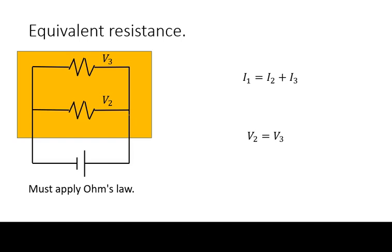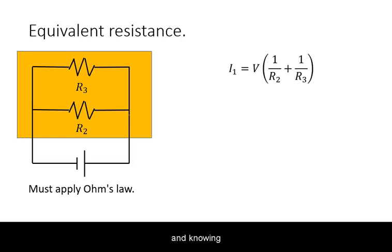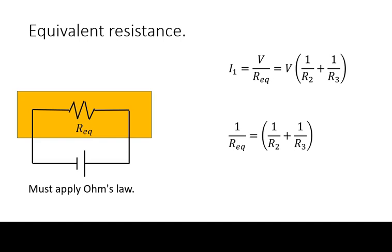For circuits, these considerations have implications for equivalent resistance. If we apply Ohm's law to the resulting divided currents and knowing that the voltage is the same, we get an equivalent resistance that is very different from the algebraic sum of resistances.